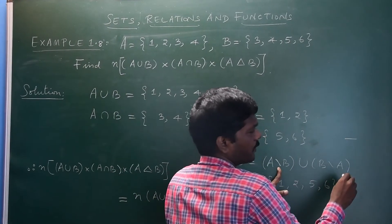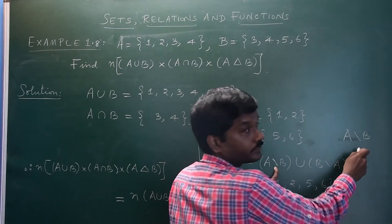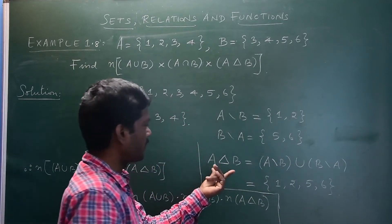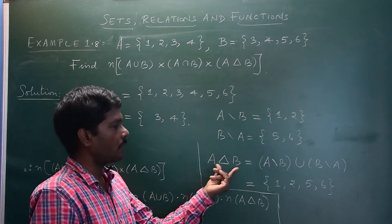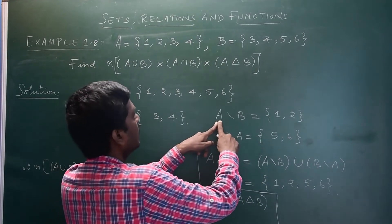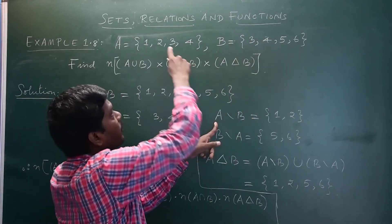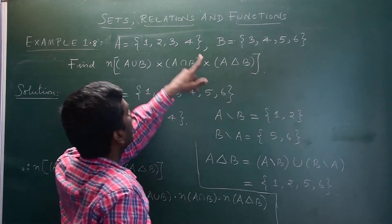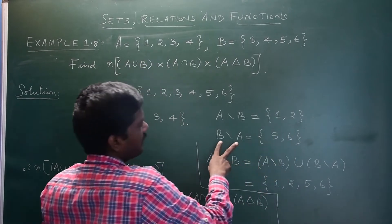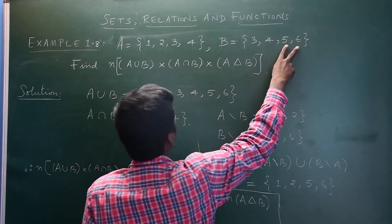To find the symmetric difference, A minus B elements which are in A but not in B, and B minus A elements which are in B but not in A, which gives 5 and 6.